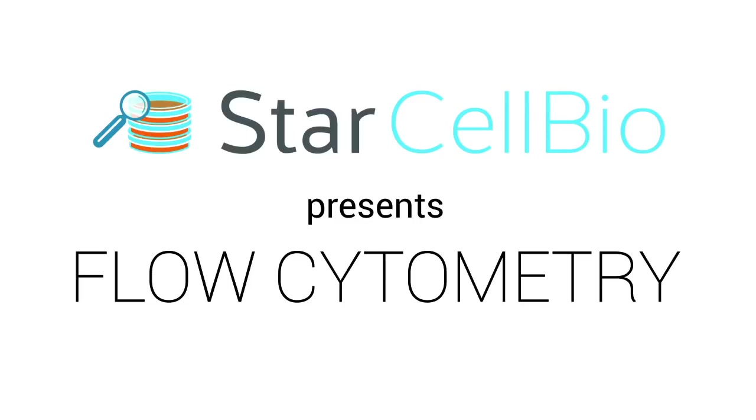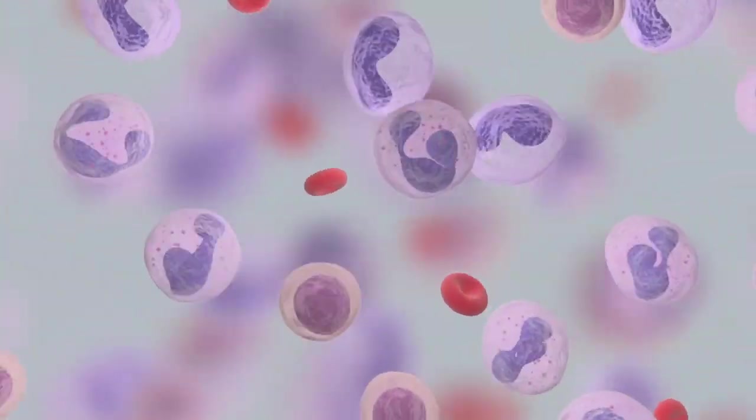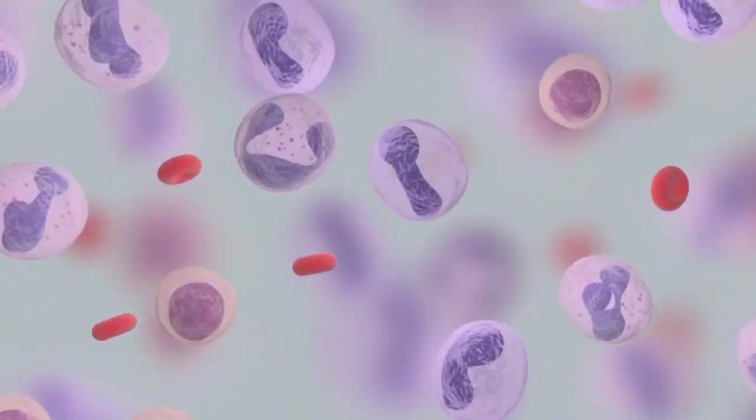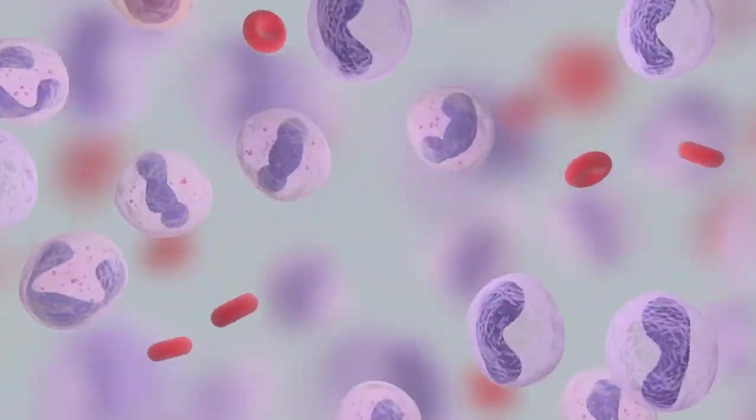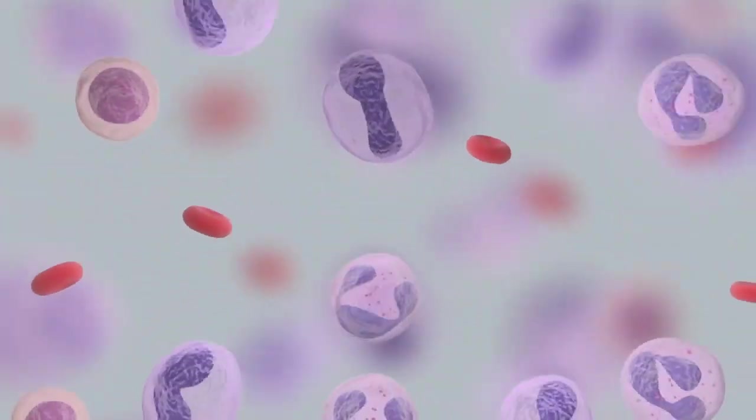In this animation, we will introduce you to the flow cytometry experimental technique. Flow cytometry is used to count and analyze the size, shape, and properties of individual cells within a heterogeneous population of cells.